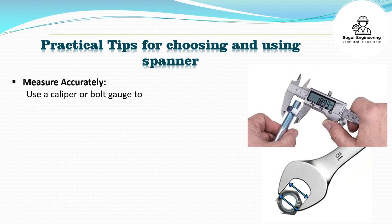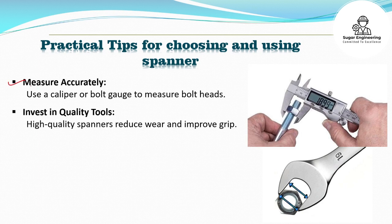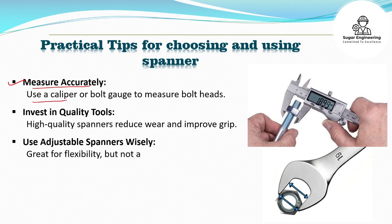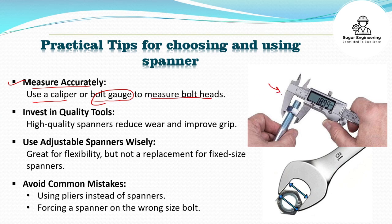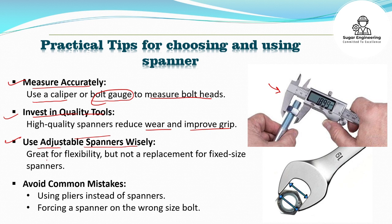Now let's discuss some practical tips for choosing and using a spanner. First, measure accurately — use a caliper, vernier caliper, or a bolt gauge to measure the bolt head. As shown here, a vernier caliper is commonly available in workshops and can be used to measure bolt size. Second, invest in quality tools — high quality spanners reduce wear and improve grip on bolts. Third, use adjustable spanners wisely — they are great for flexibility but not a replacement for fixed-size spanners, and should be used only where lower torque is required.